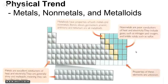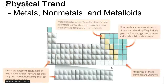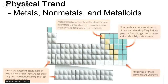For the first physical trend — metals, non-metals, and metalloids — if you look at the periodic table, most atoms are metals. Some are non-metals, and very few are metalloids. The metalloids take this little stair step that divides the metals from the non-metals. Metals are excellent conductors of electricity and heat and are generally shiny. Non-metals are poor conductors of heat and electricity — these are gases such as nitrogen and oxygen. Metalloids are kind of in between, having properties of both. These include boron and silicon, which are semiconductors used in things like computer chips.